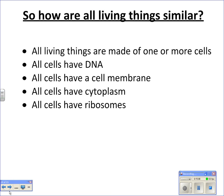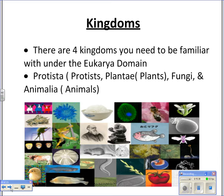How are living things similar? All living things are made of one or more cells, all have DNA, all have a cell membrane, all cells have cytoplasm, and all cells have ribosomes. These are characteristics shared by all living things — something that may pop up on the EOC — and we'll do practice with this in class.